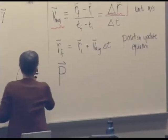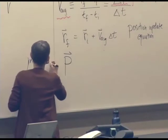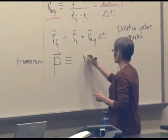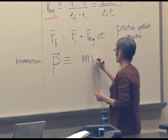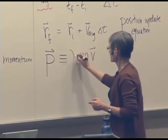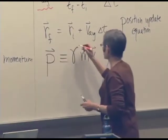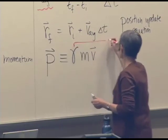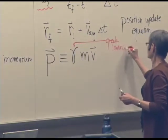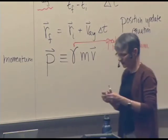Momentum is a vector. And it's defined as the mass of an object times its velocity times a factor, which is Greek lowercase gamma. Third letter of the Greek alphabet.